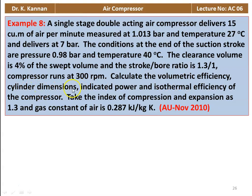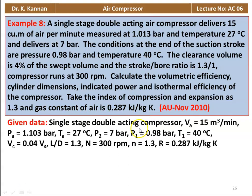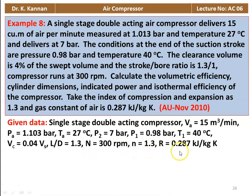Calculate the volumetric efficiency, cylinder dimensions, indicated power and isothermal efficiency. Take the index of compression and expansion as 1.3 and the gas constant for air equal to 0.287 kilojoules per kilogram Kelvin. Given data: single-stage double-acting, volume of air 15 meter cube per minute, atmospheric pressure 1.013 bar, temperature 27°C, delivery pressure 7 bar, suction pressure 0.98 bar, T1 equal to 40°C, clearance volume 0.04 times Vs, L by D ratio 1.3, speed 300 rpm, n equal to 1.3, R equal to 0.287 kJ/kg·K.